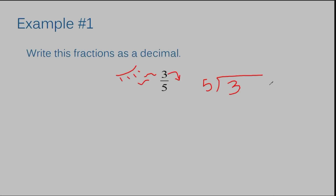A lot of times students just want to put the larger number inside, but that's not always the case. In fact, most of the time when you're dealing with fractions, you're going to have a smaller number on the inside. Because five cannot go into three, you have to remember: add decimal zero. You have to also bring that decimal straight up, so I like to do this right in the beginning so I don't forget.